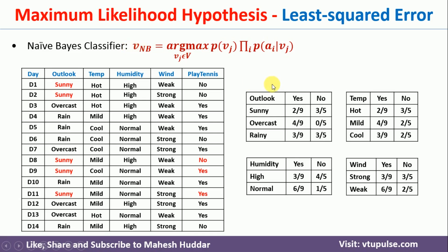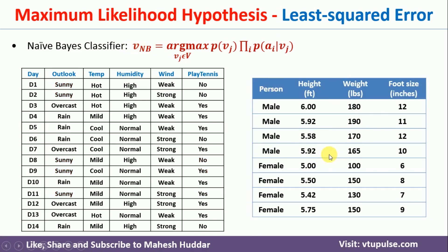But what happens if we have data like this? Here, 'person' is the target with two classes: male and female — that is discrete, no issues. But when you consider the three attributes — height, weight, and foot size — every attribute has continuous values. Height takes values like 6, 5.92, 5.58, and so on; they are not discrete, they are continuous values.